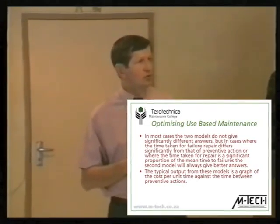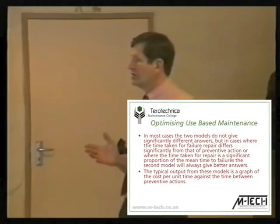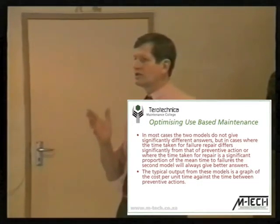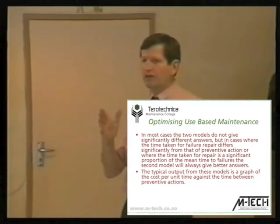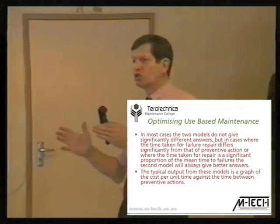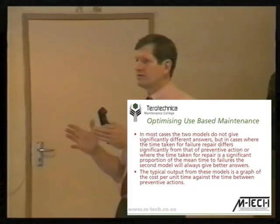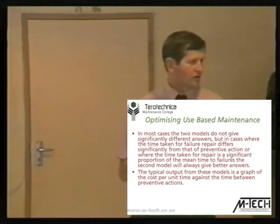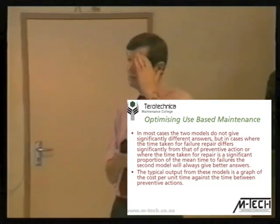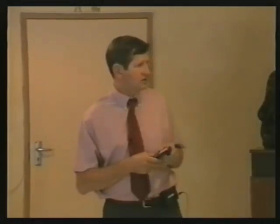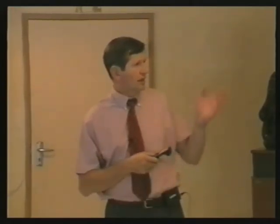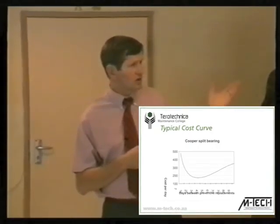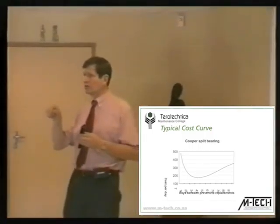The difference between the two models on pages 412 to 414 is simply that the first one does not take the time used to effect the repair into account, whereas the second one does. The second model is better to work with; if you don't take times into account, you can just set those two times equal to zero and then you have the first model. In most cases the two models do not give significantly different answers — only when the time for failure repair is a lot longer than for preventive repair. The typical output is a graph of cost per unit time against time between preventive actions, which looks like this graph of a Cooper split bearing giving cost per day.